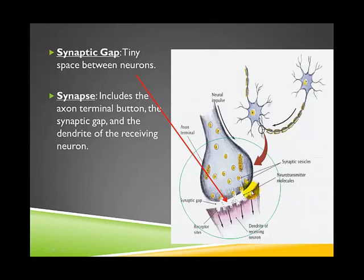This area between neurons is called the synaptic gap. For a long time, before anybody was able to really examine or look at individual nervous system tissue, there was this idea that all the neurons — all the cells — are actually physically, directly linked up to one another. But when we were finally able to examine tissue underneath an electron microscope, scientists observed that neurons actually do not directly touch one another.